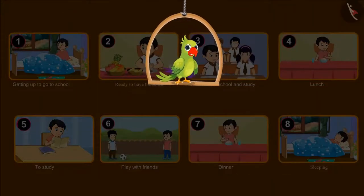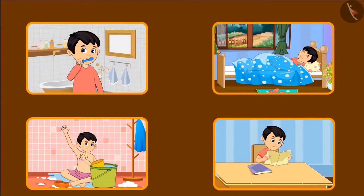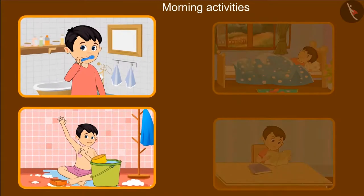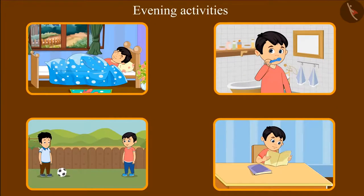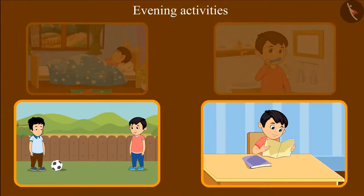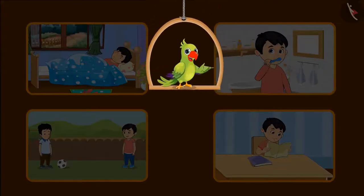So children, have you ever thought about your routine? Here are some activities that take place throughout the day. Can you tell which of these activities we do in the morning? Yes, in the morning we bathe and brush our teeth. And now, can you tell us what do we do in the evening? You are absolutely right, children — we play in the evening, and we also study. These are the activities that happen at different times throughout our day.